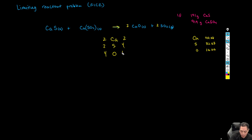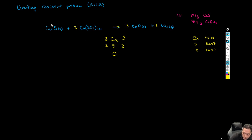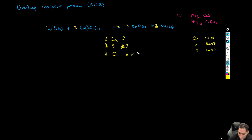Second attempt: we double the oxygen coefficient, changing it from one to two, and try again. Now we have three calciums, so we put a three on the product side. We also have three sulfurs, so we need a three there as well. Counting oxygens: two times four is eight on one side, and three plus three times two equals nine on the other — still not balanced — so we try again.